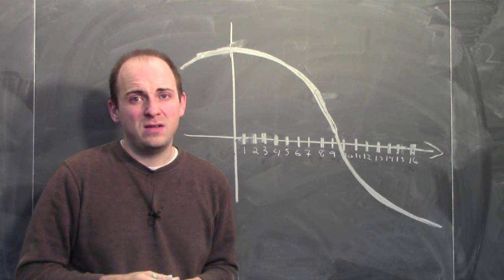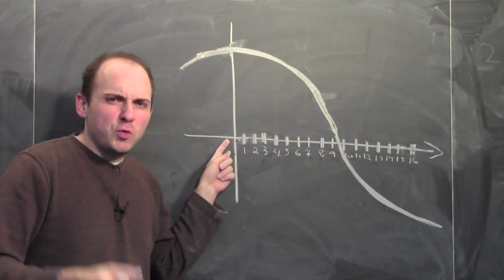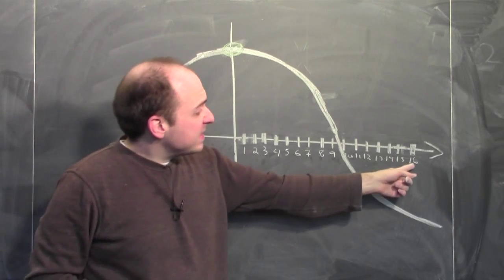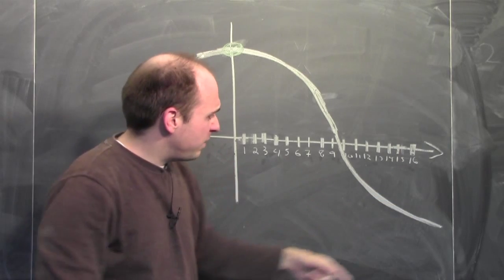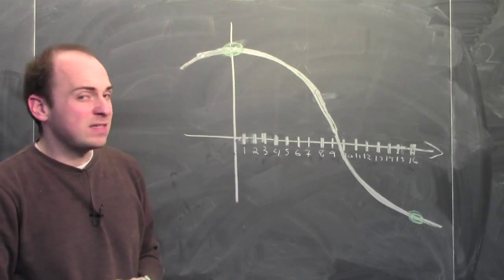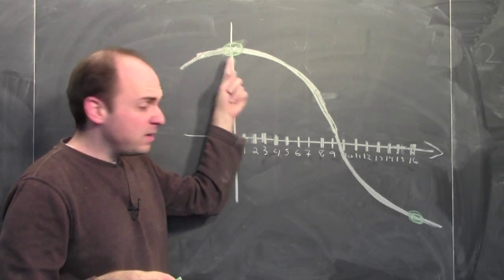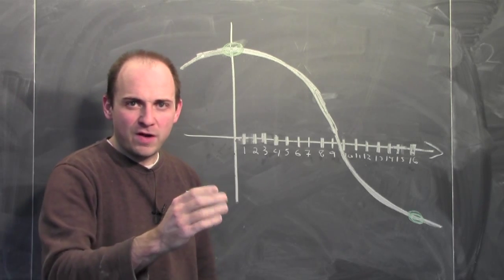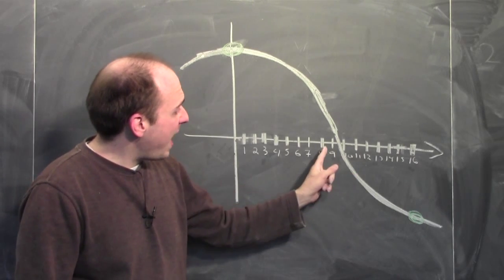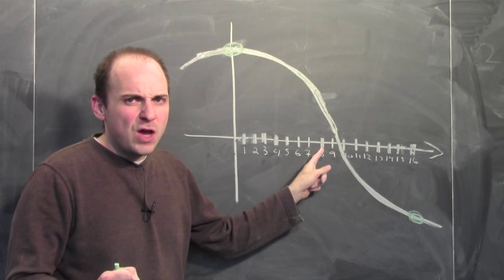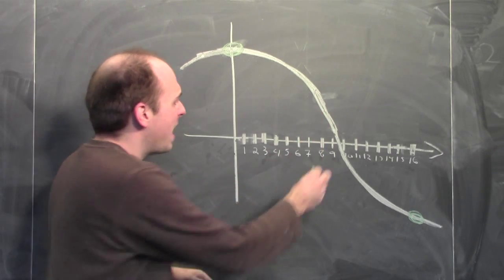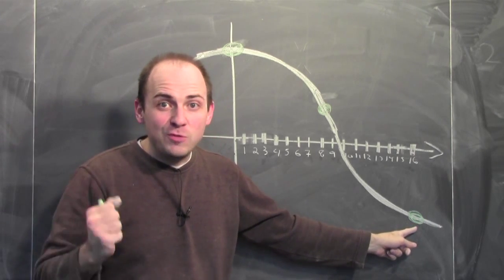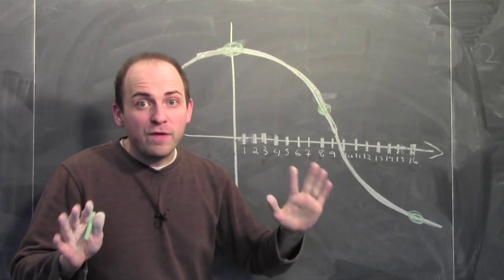We're trying to find approximately where this continuous function crosses the x-axis — a zero of this function. I might begin by asking: is the function positive or negative at 0? It's positive at 0. Then at 16: the function is negative. Since it's continuous, positive at 0 and negative at 16, by the intermediate value theorem there's a zero in between. I cut the interval in half and ask at f of 8 — the value at 8 is positive. So by IVT, there must be a zero between 8 and 16.